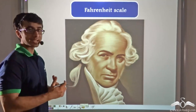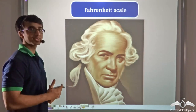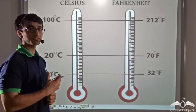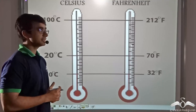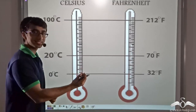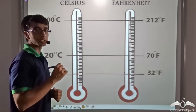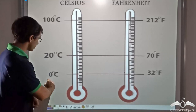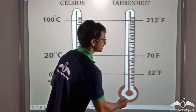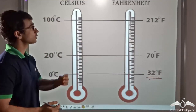Next we talk about the Fahrenheit scale, which was first used and invented by the German scientist Daniel G. Fahrenheit. Similarly to the Celsius grading, we place the thermometer in a mixture of ice and water and find that the liquid becomes steady at one point. In the Fahrenheit scale, that ice point is 32 degrees Fahrenheit.